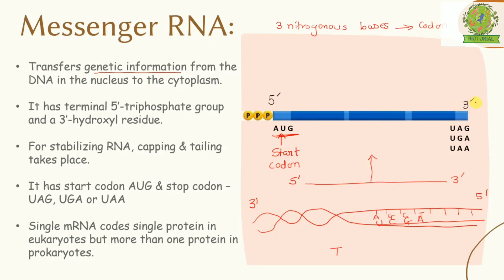We also have a stop codon near the 3' end. The stop codon can be UAG, UGA, or UAA — any one of them can be present. The start codon helps to recognize the site of initiation, meaning protein synthesis begins there. The stop codon helps recognize the site where protein synthesis has to be stopped.